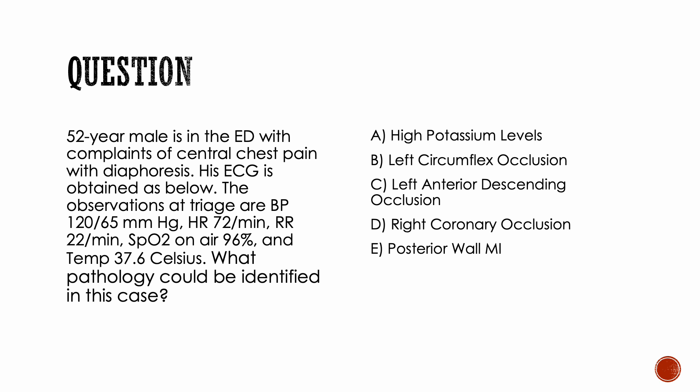The answer choices are: high potassium level, left circumflex occlusion, left anterior descending occlusion, right coronary occlusion, or posterior wall MI.